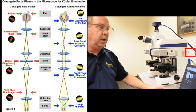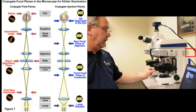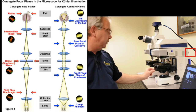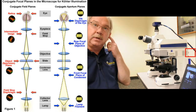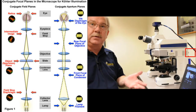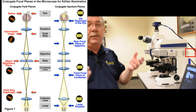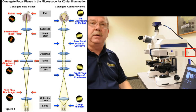There's another aperture plane located in the condenser itself — that's where, aptly named, we have our aperture diaphragm. Our aperture diaphragm is what we use to control the contrast and depth versus the resolution of the image we're seeing.